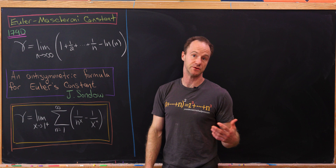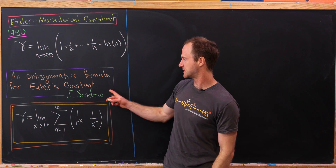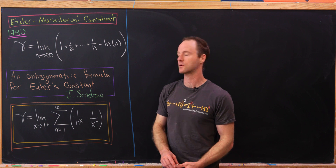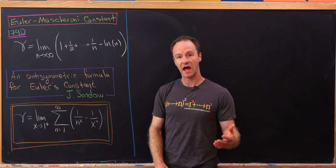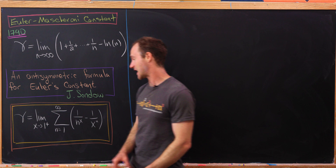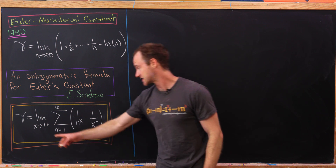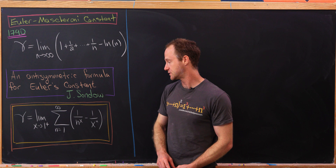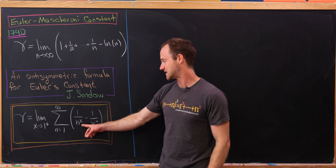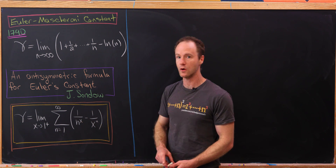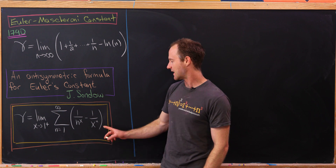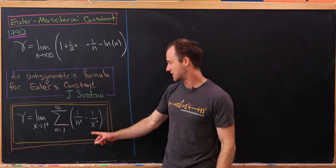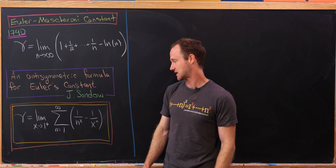The result we're going to look at today comes from this paper of Jay Sondal, which is called 'An Anti-Symmetric Formula for Euler's Constant.' We will show that gamma is in fact equal to the limit as x goes to 1 from above of the sum as n goes from 1 to infinity of 1/n^x minus 1/x^n. By anti-symmetric, we mean if we swap n and x, we just pick up a minus sign.